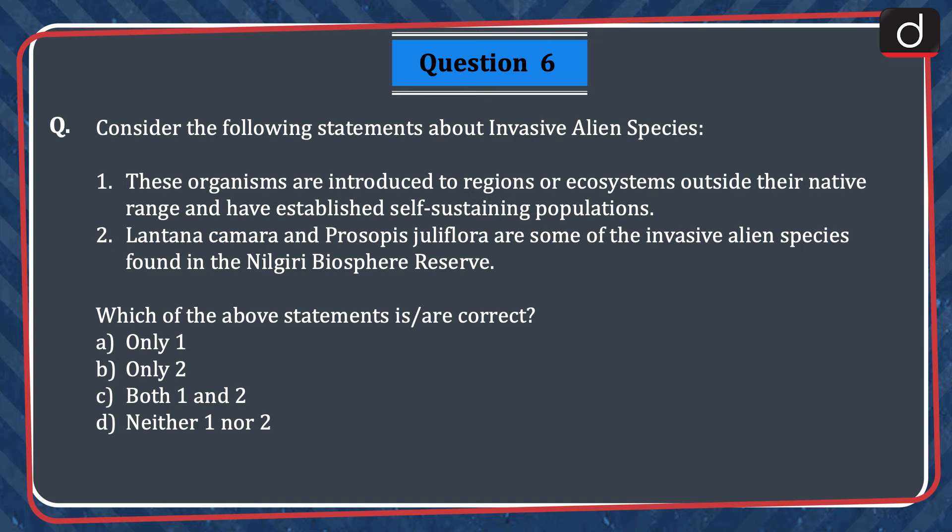Next question: consider the following statements about invasive alien species. (1) These organisms are introduced to regions or ecosystems outside their native range and have established self-sustaining populations. (2) Lantana camara and Prosopis juliflora are some of the invasive alien species found in the Nilgiri Biosphere Reserve. Which statements are correct? Options: (A) only one, (B) only two, (C) both one and two, or (D) neither one nor two. The correct answer is option C — both one and two.